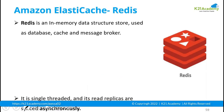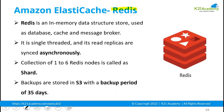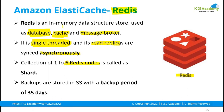ElastiCache for Redis uses the Redis engine and helps you create an in-memory data structure store. It can be used as a database, a cache, or a message broker. Unlike Memcached, Redis supports update operations, which is why it can act as a full database. It is a single-threaded application that creates read replicas which get replication asynchronously. A shard can have up to 6 Redis nodes.